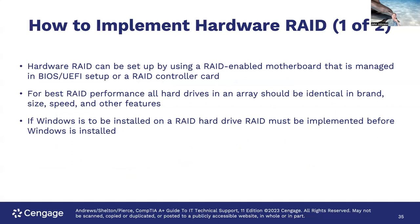Implementing hardware RAID: hardware RAID can be set up using a RAID-enabled motherboard managed in BIOS/UEFI, or by using a RAID controller card. For best RAID performance, all hard drives in an array should be identical in brand, size, speed, and other features. It's okay to have a larger drive, but it will only use the capacity of the smallest drives — the weakest link drives the array. If Windows is to be installed on a RAID hard drive, RAID must be implemented before you install Windows.